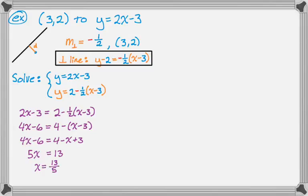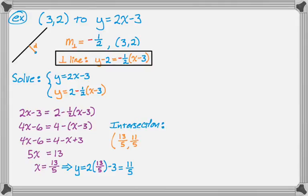Once I know that, I need to plug it into either of the equations. The easier one to work with is y equals 2x minus 3. So y is 2 times 13 fifths minus 3. So 26 fifths minus 15 fifths is 11 fifths. Now I know the intersection point: (13 fifths, 11 fifths).